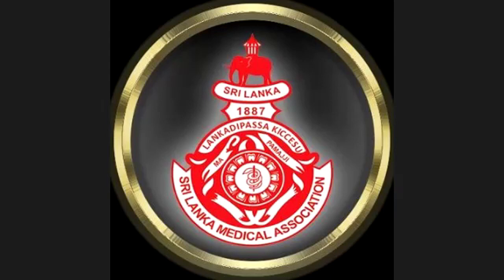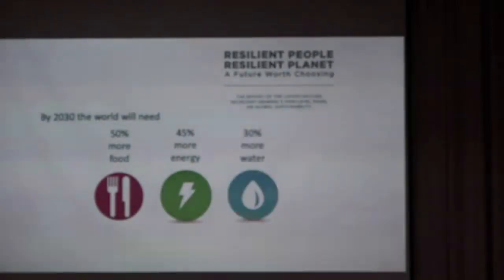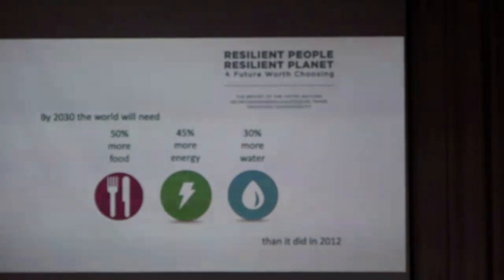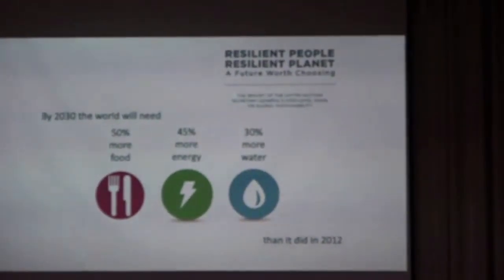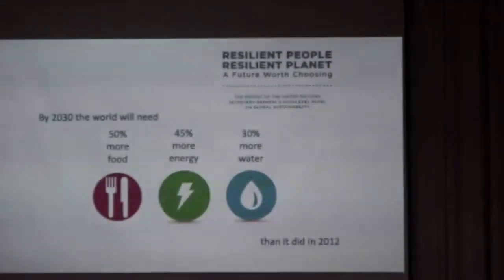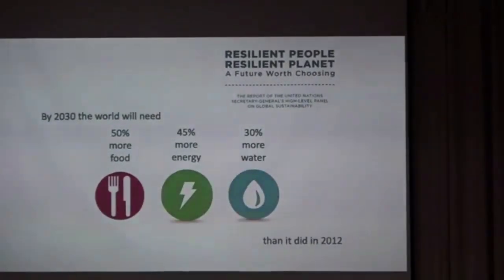That kind of urbanization and increasing population means that by 2030 we need 50% more food, 45% more energy, and 30% more water than we did in 2012. You need all of that economic development surrounding that growth, which is also a factor in increasing risk, as more assets are exposed and we become more dependent on those assets.